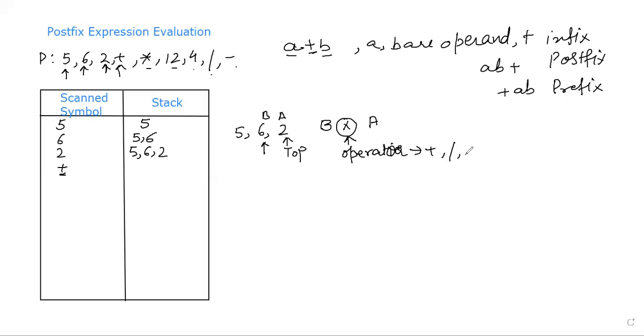So when you come across this, the b element is 6 and this one is your a. So what we need to do now is we need to do 6 plus 2, that will give me 8.